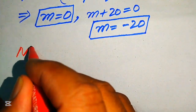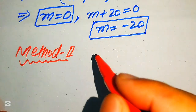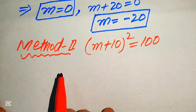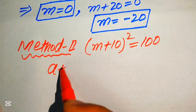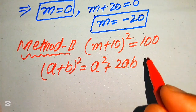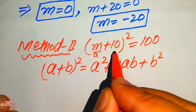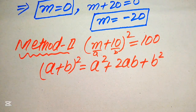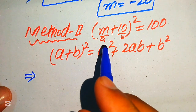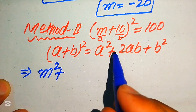In the second method, we copy down the given equation: (m + 10)² = 100. Here we solve this using the expansion formula (a + b)² = a² + 2ab + b². We identify a = m and b = 10, then substitute these values into the formula.